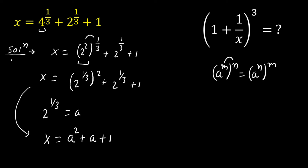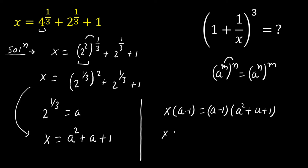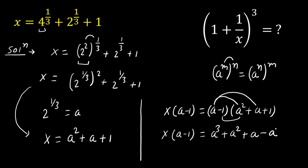Here if we multiply both sides by (a - 1), then on the left-hand side x is multiplied by (a - 1), and on the right-hand side (a - 1) is multiplied by (a² + a + 1). Expanding: a·a² = a³, a·a = a², a·1 = a, then (-1)·a² = -a², (-1)·a = -a, (-1)·1 = -1. The +a² and -a² cancel, and +a and -a cancel, leaving x(a - 1) = a³ - 1.